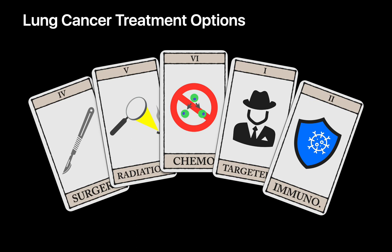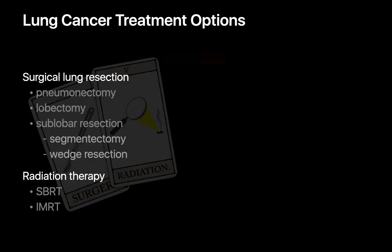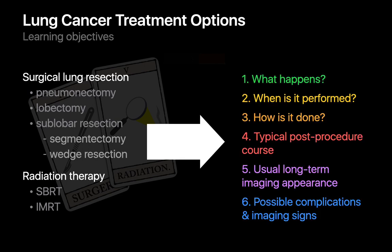We're going to focus on two strategies that have been the backbone of lung cancer treatment for many decades: surgical resection and radiation therapy. We'll review the most common surgical procedures and radiotherapy techniques for lung cancer, and for each one, we'll tackle six issues.